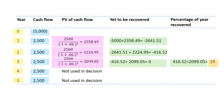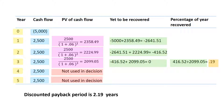Since the amount is covered in the third year, I don't need to use the cash flows for the fourth or fifth year. I used the whole first year, the whole second year, and 19% of the third year. So my answer is 2 years and 0.19 years, or approximately 26 months.